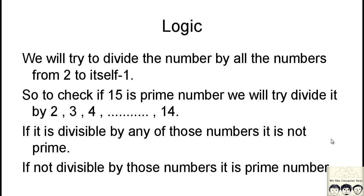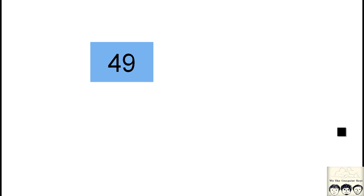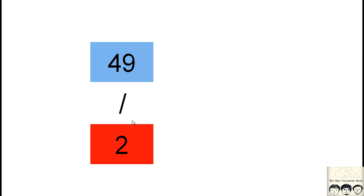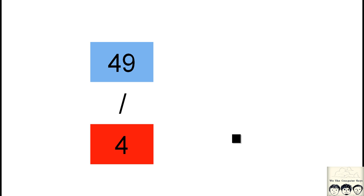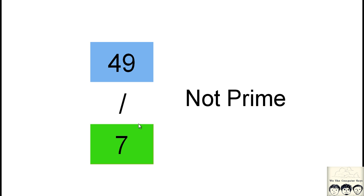Let me show an animation to make this concept clearer. Suppose we want to check whether 49 is prime. We try to divide it by 2 — not divisible. Then 3 — not divisible. We continue: not divisible by 4, not by 5, not by 6. But when we come to 7, 49 is divisible by 7. So it is not a prime number.